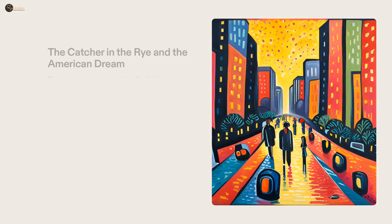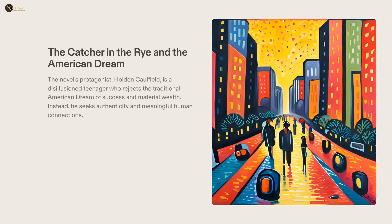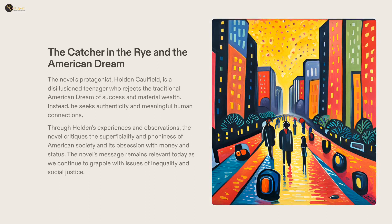Set in the mid-20th century, J.D. Salinger's The Catcher in the Rye follows Holden Caulfield's personal struggle to find genuineness in an increasingly materialistic society. Along his journey, Holden rejects the traditional values of the American Dream and confronts existing issues of inequality and injustice. With its powerful message and its lasting relevance to modern readers, Salinger's novel stands as a timeless classic.